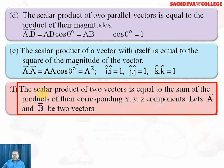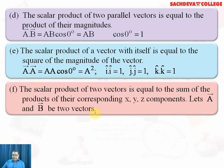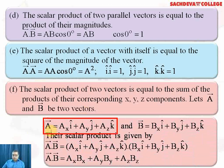The next property is: the scalar product of two vectors is equal to the sum of the products of their corresponding x, y, z components. Let A and B be the two vectors. We write vector A as A_x·i + A_y·j + A_z·k, where A_x is the component of vector A along the x-axis and I is the unit vector along the x-axis. Similarly, A_y is the component of vector A along the y-axis and j is the unit vector along the y-axis. Then A_z·k represents the component along the z-axis.